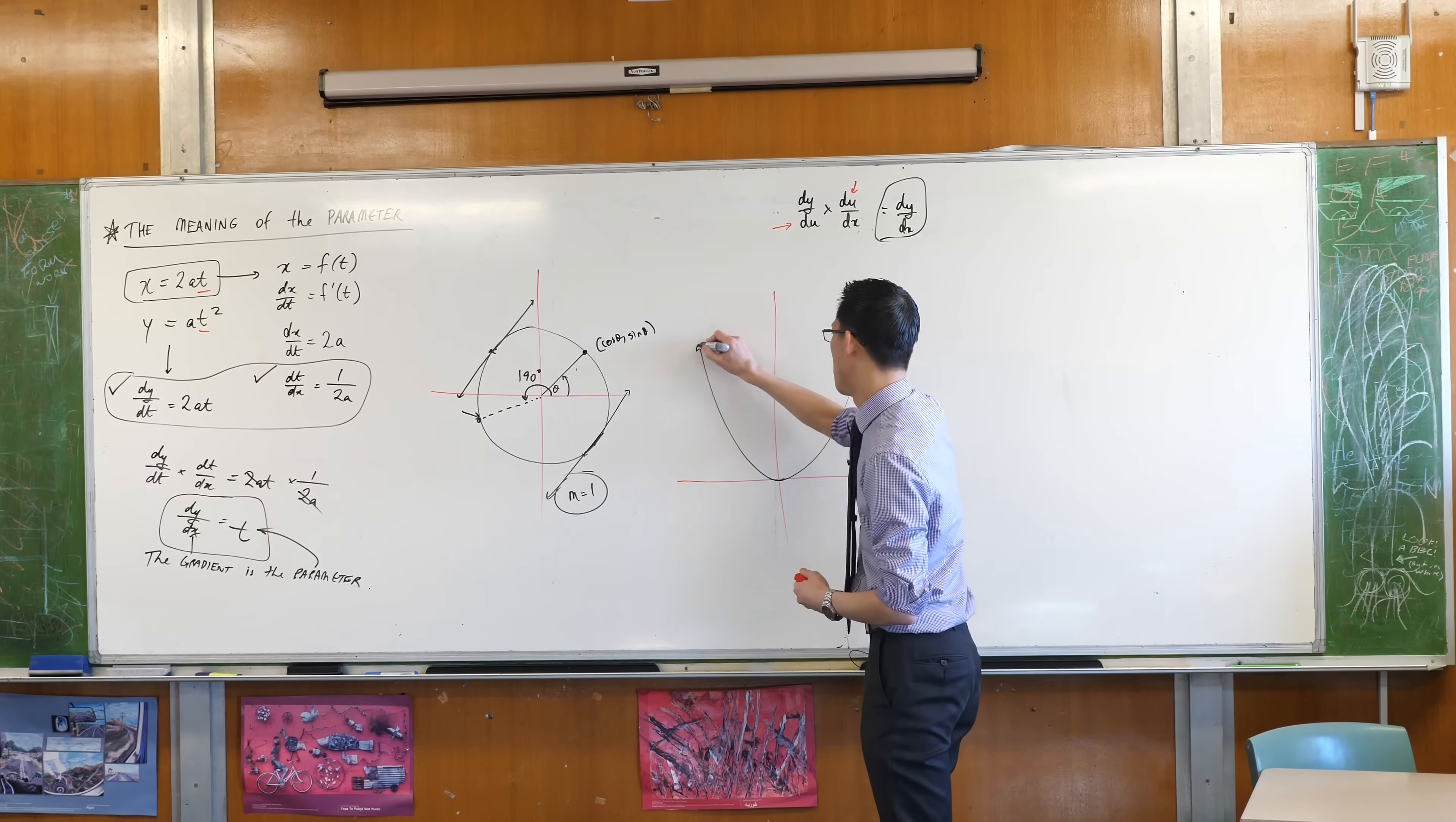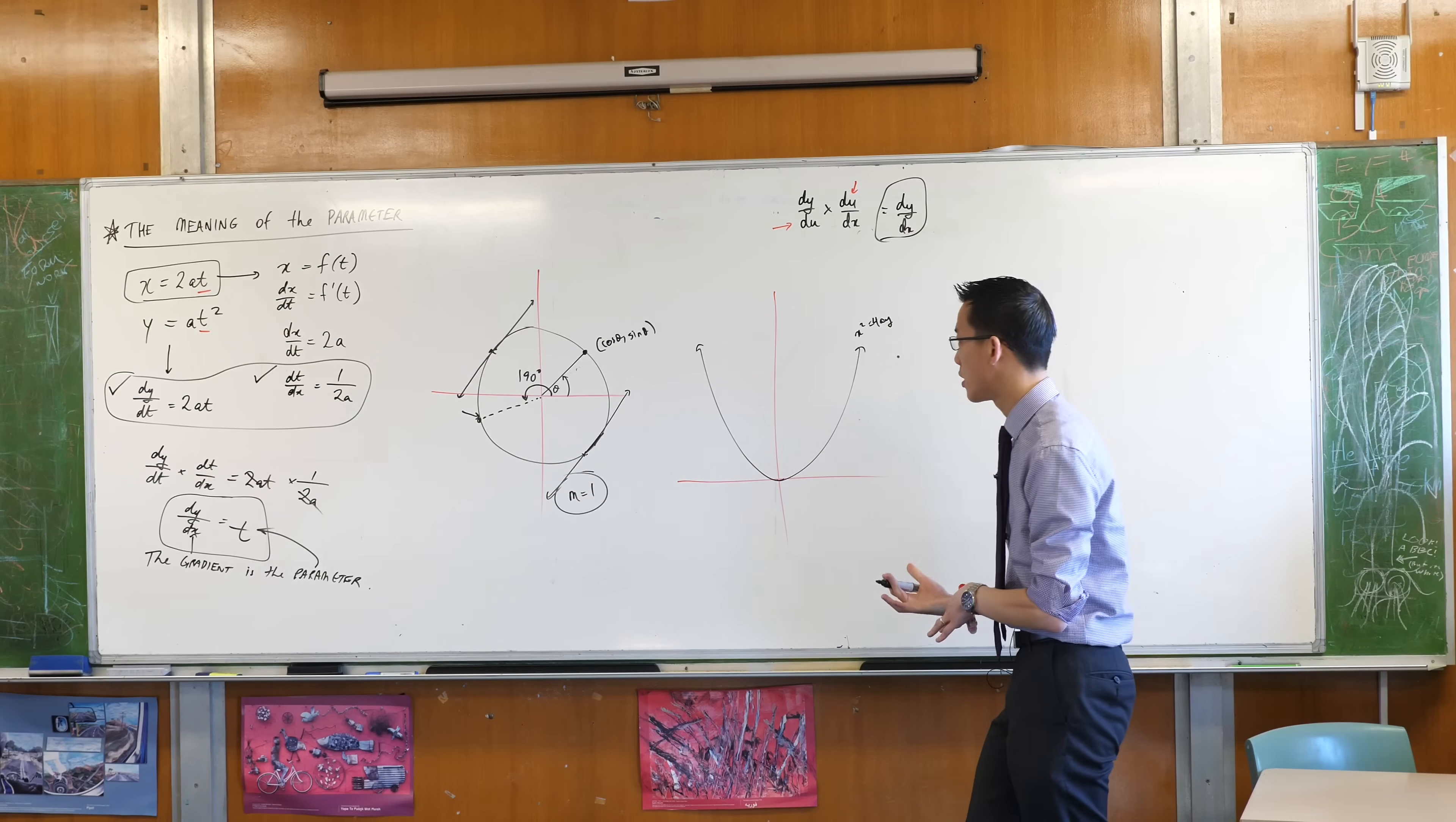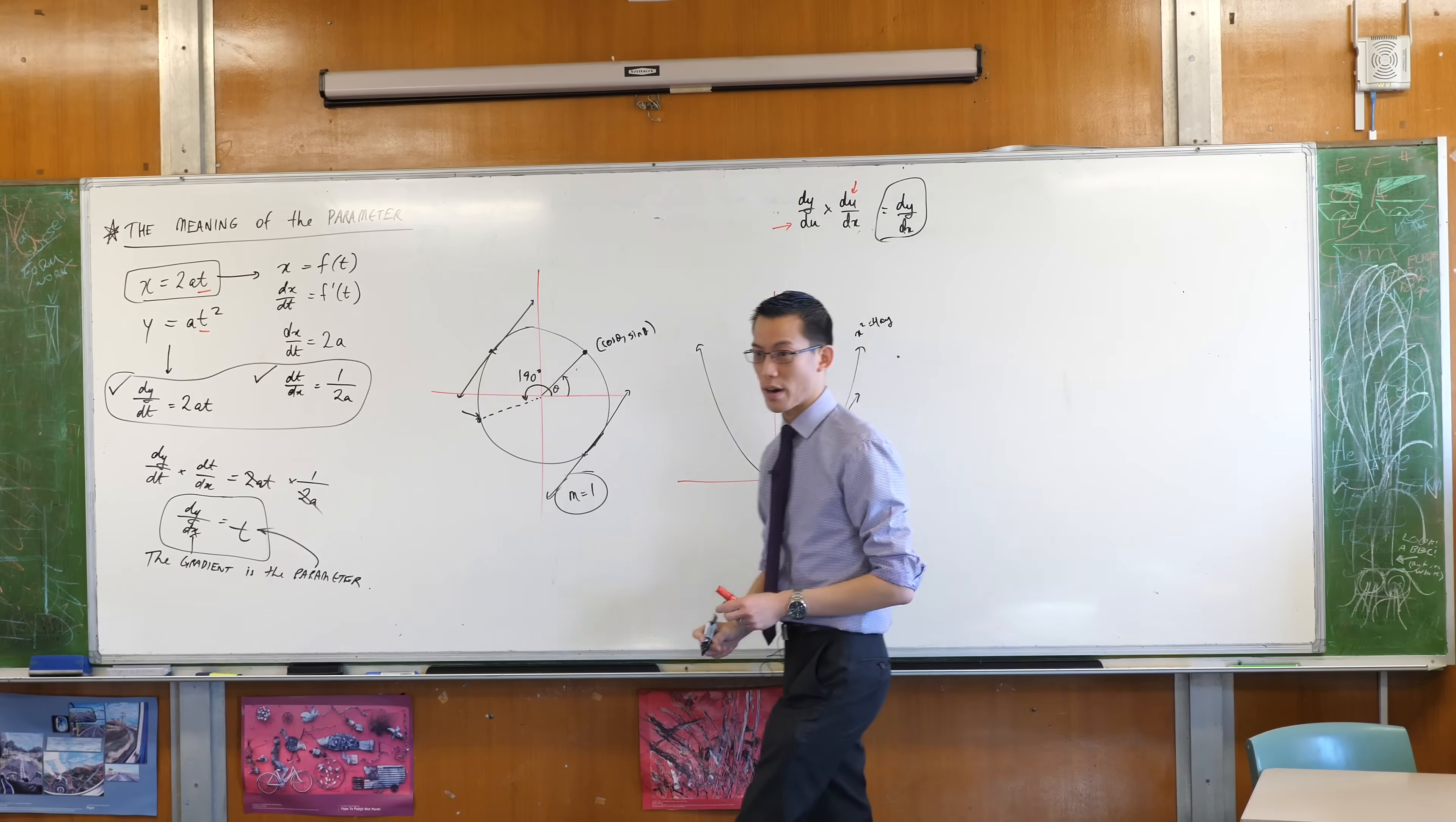If I go back to my gradient equals 1 thing, if this is x squared equals 4ay, where would there be a gradient of 1? Well, I don't know, something like that, right?